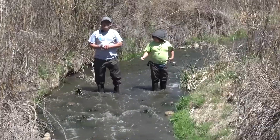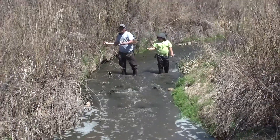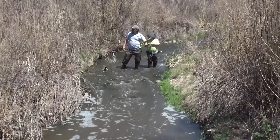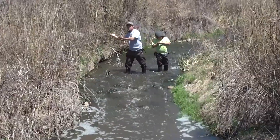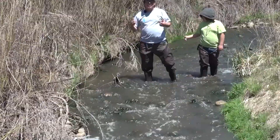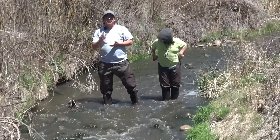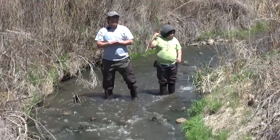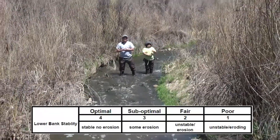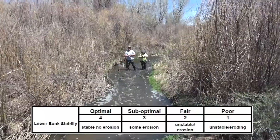As we move further upstream, the bank is actually stabilized — there's a lot of great vegetation with heavy grass and willows holding both sides together. The amount of erosion we see here is very limited. Other than where we first started our survey, I believe this would be in a sub-optimal condition, or a score of three.